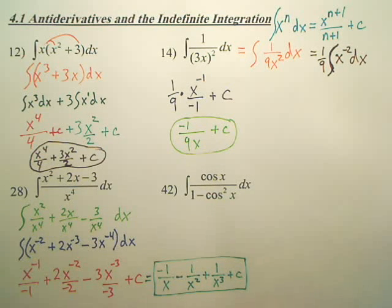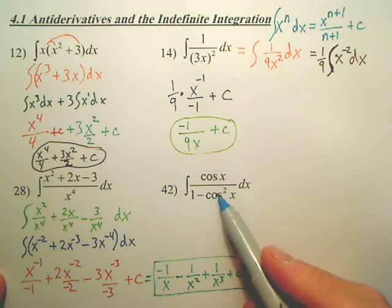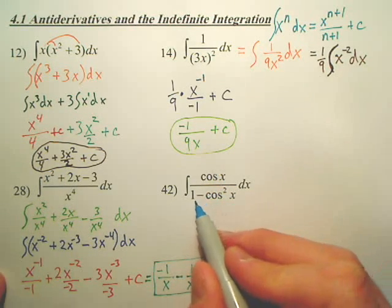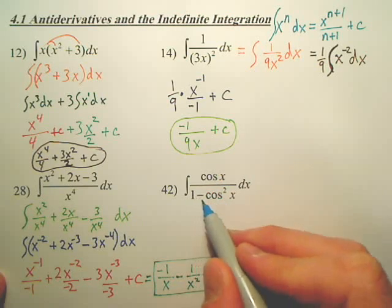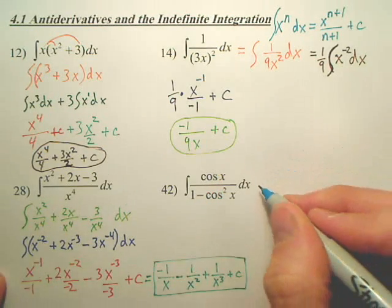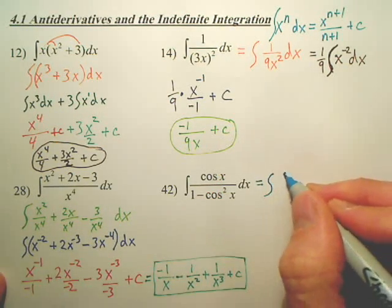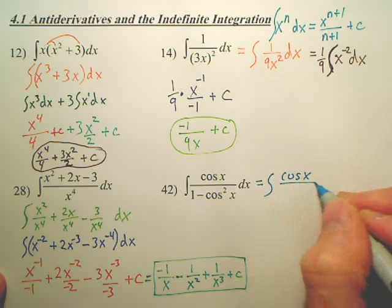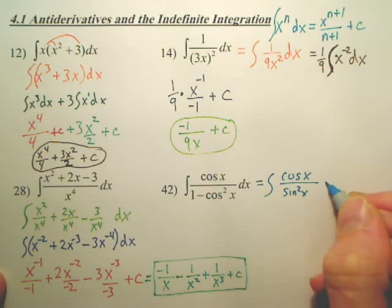The next one, that's freaky. There's no division property, but watch this. What can I rewrite this as? You can rewrite this as cosine x over sine squared x.